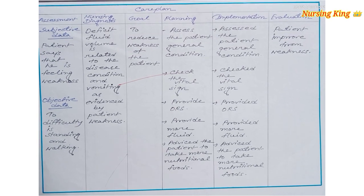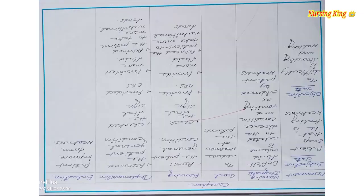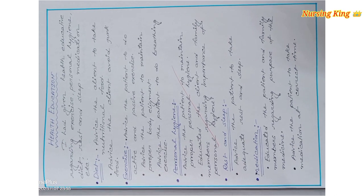So in that care plan, six components are: assessment, nursing goal, planning, implementation, evaluation. After that, you have to mention health education.